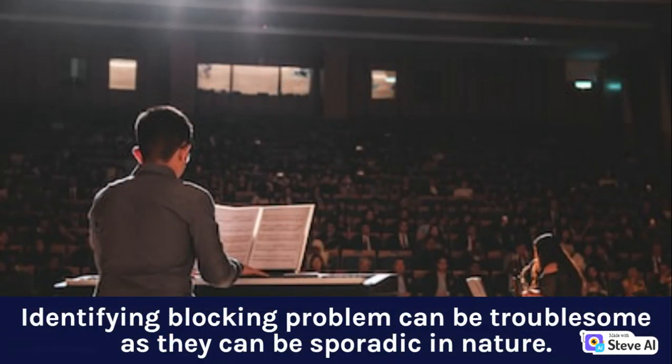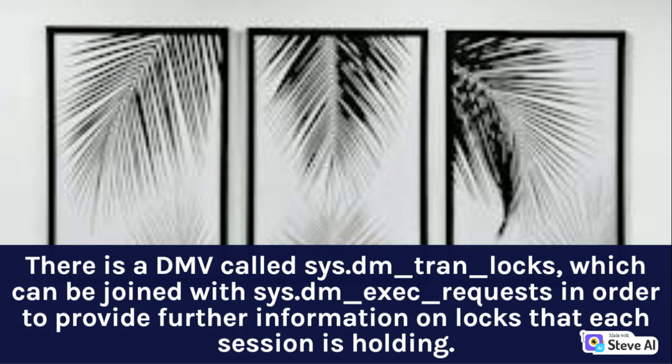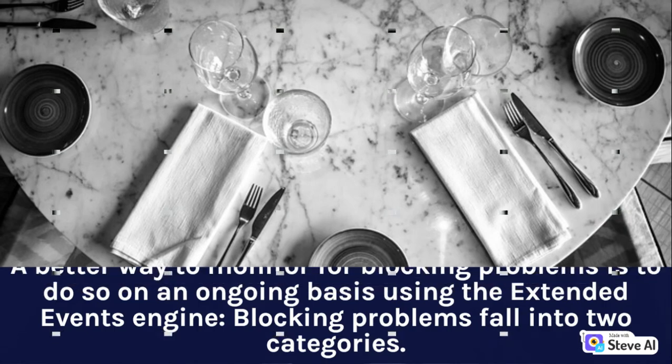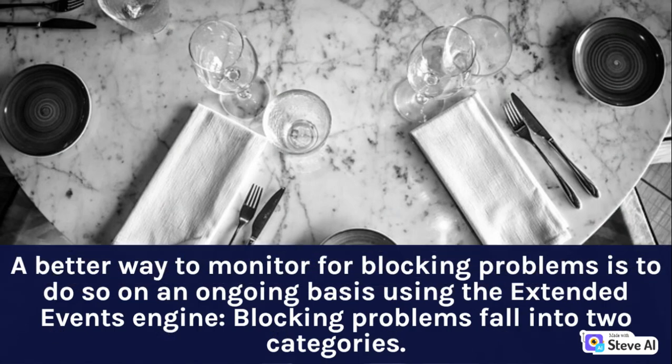Identifying blocking problems can be troublesome as they can be sporadic in nature. There is a DMV called sys.dm_tran_locks which can be joined with sys.dm_exec_requests to provide further information on locks that each session is holding. A better way to monitor for blocking problems is to do so on an ongoing basis using extended events.